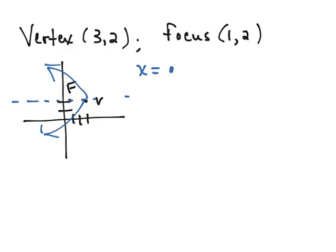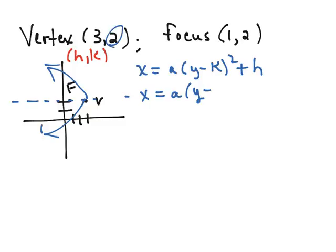I'm going to go ahead and write the equation x equals a times y minus k squared plus h. Our vertex is h, k so we can fill that into our equation. x equals a times y minus k is going to be 2 and h is going to be 3.